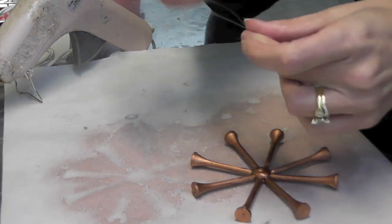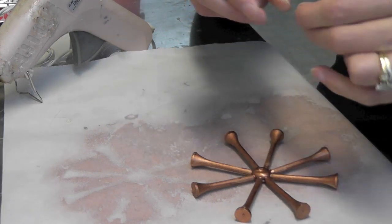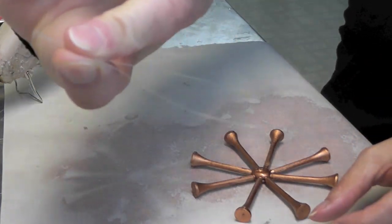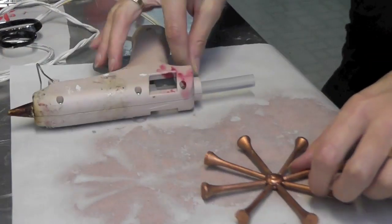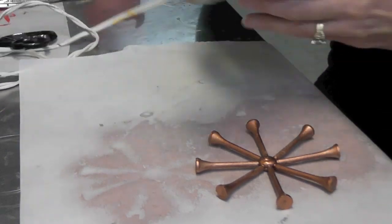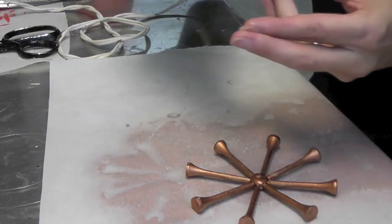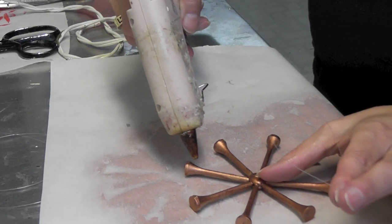Now the first thing I'm going to do, because I'm going to want to hang it, is I'm going to take a piece of fishing line, which I don't think you can really see very well, and a little bit of hot glue. I'm going to pick one of these to just put a little bit of hot glue on here.